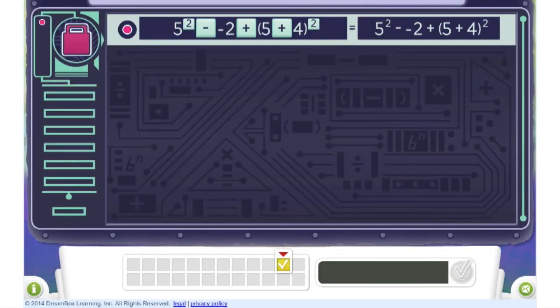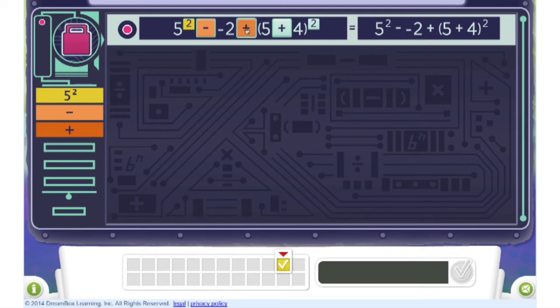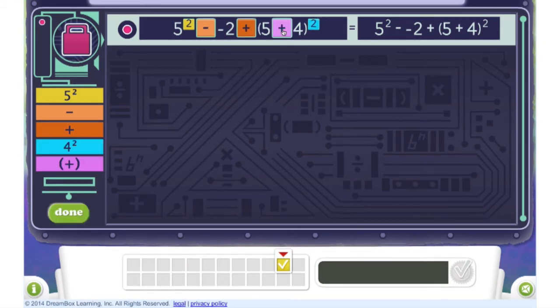In this more advanced DreamBox lesson, students no longer need to compute the answers. Instead, they simply need to select the operations in an acceptable order. By design, this problem and others have more than one valid order.